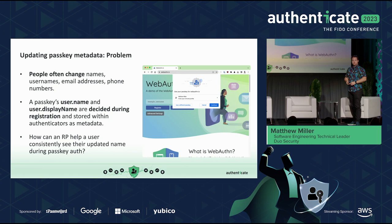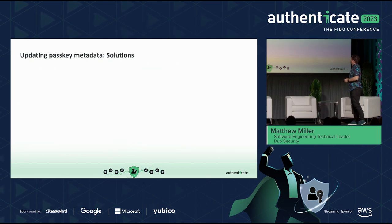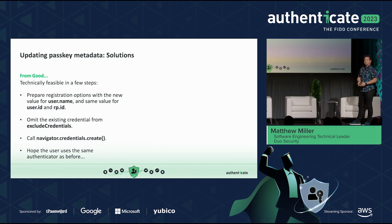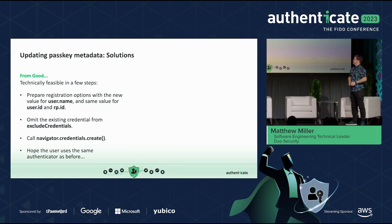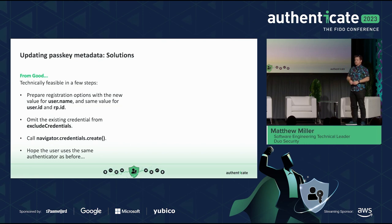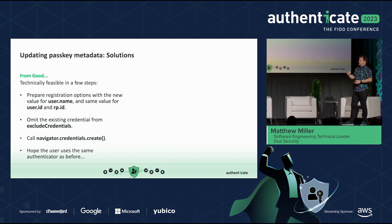People change names all the time. People change email addresses and phone numbers. How do we get the systems to adapt to that? Here's what is currently technically feasible: passkeys are discoverable credentials, meaning the authenticator stores credential material for a given hashed RP ID and user ID. When you perform multiple registrations with the same RP ID and the same user ID, you will overwrite the previously existing credential. So the technique is: prepare your registration options with the new updated name, and leave out the credential you want to overwrite from exclude credentials. The authenticator will then overwrite the one with the bad name.